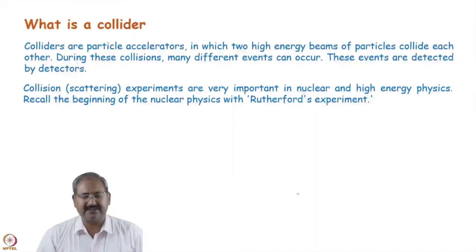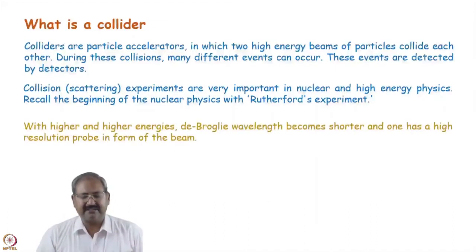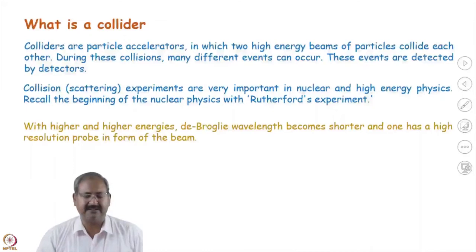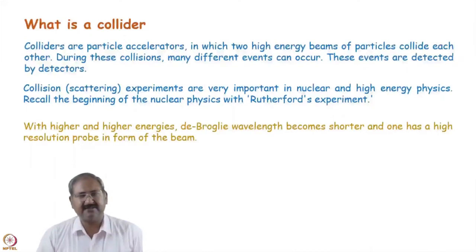Later it was shown that in fixed-target experiments, where an accelerated beam hits a stationary target, much less energy is available compared to two colliding beams. Having two colliding beams provides much, much greater benefit from the energies, and this drove the push for higher and higher energies and the building of colliders.